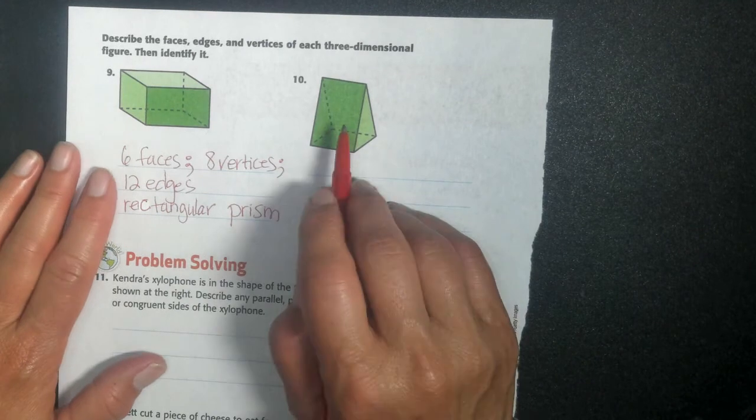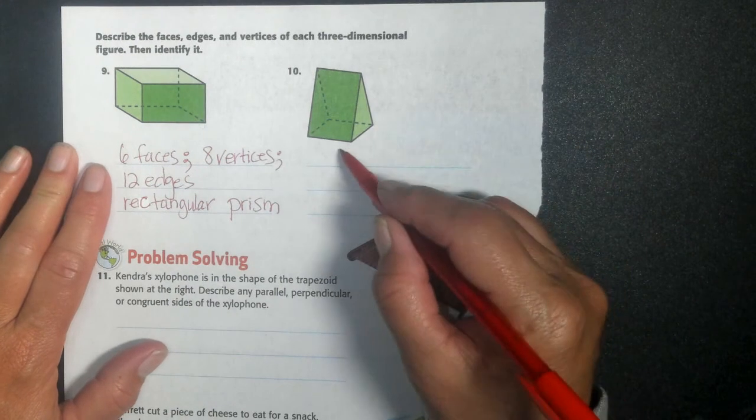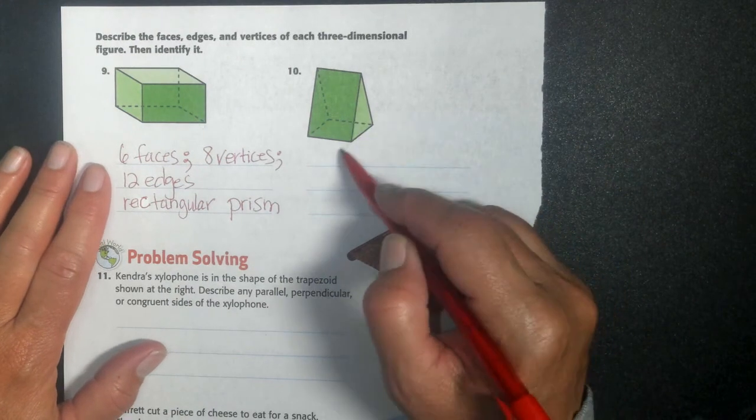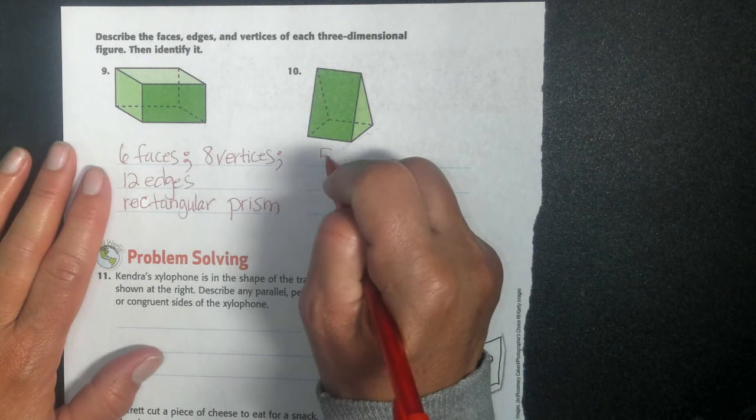Next one, let's count. How many faces does it have? It has one, one on the back, and one on the bottom. So one, two, three, one on this side, one on this side. So three plus two, five faces.